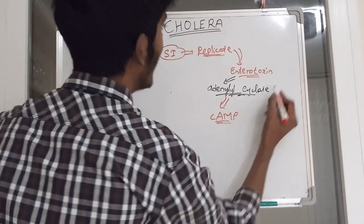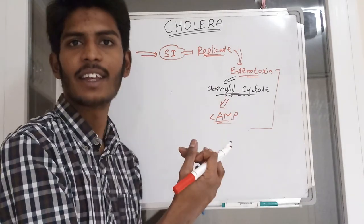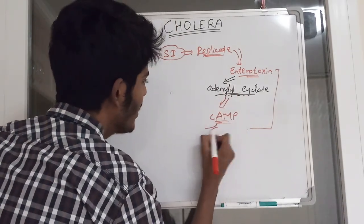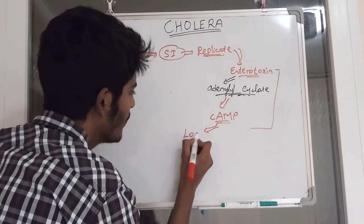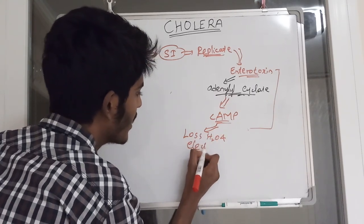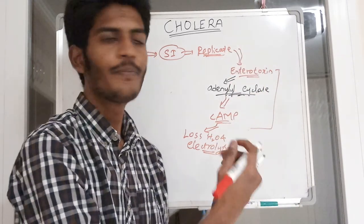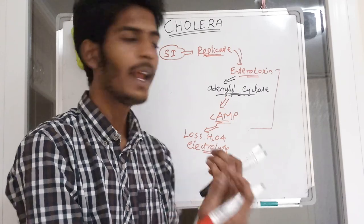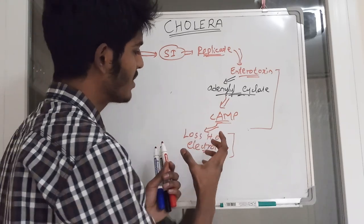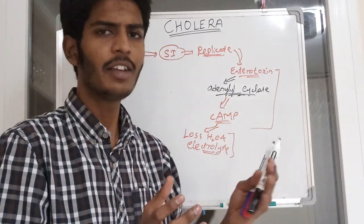Remember, the toxin is playing this role but the bacteria itself is not entering into the mucosa or layers of the intestine — this has clinical significance. The elevated cAMP changes the permeability and causes loss of water and electrolytes from the intestine. Water and electrolytes are secreted into the lumen of the intestine rather than being absorbed, and this is what causes massive diarrhea.